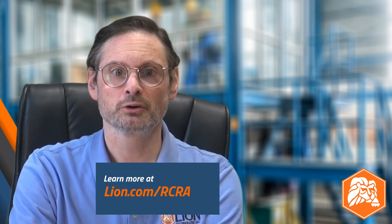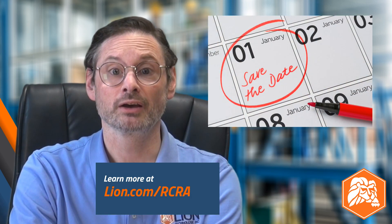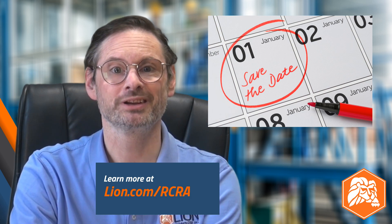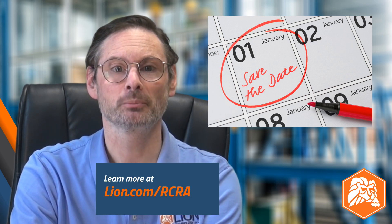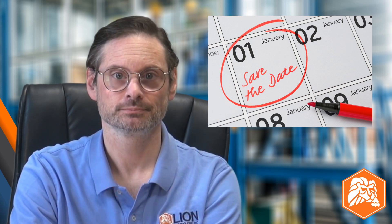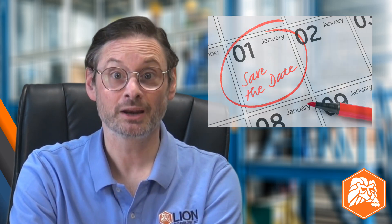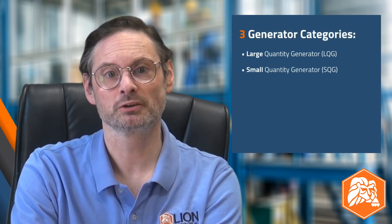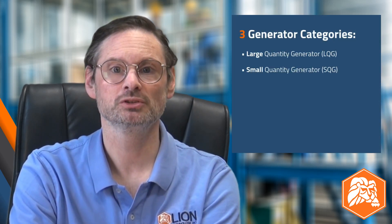Your generator category is calculated based on the amount and type of waste your site generates in any calendar month. Our three categories are Large Quantity Generator, or LQG; Small Quantity Generator, or SQG; and Very Small Quantity Generator, or VSQG.